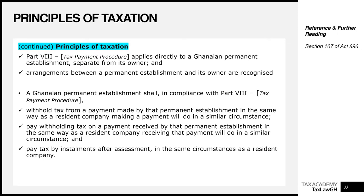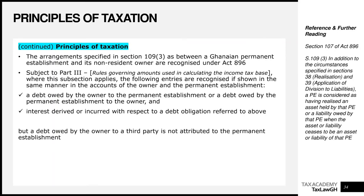A Ghanaian PE must withhold tax from any payments it makes in the same way that a resident company would. The next point is that the Ghanaian PE must pay withholding tax on any payment received by that PE in the same way as a resident company receiving that payment would do in a similar circumstance — meaning people must also withhold on the PE in the same manner they would withhold on a resident company. Finally, the Ghanaian PE must also pay tax by installment after assessment in the same circumstances as a resident company.